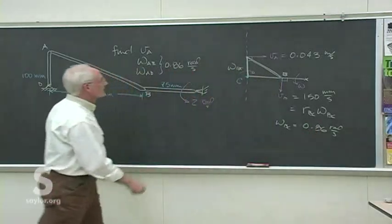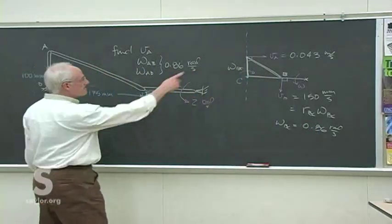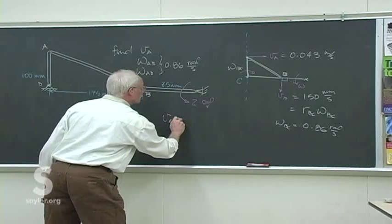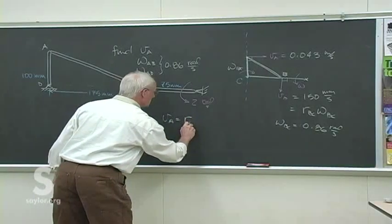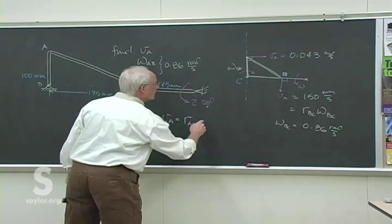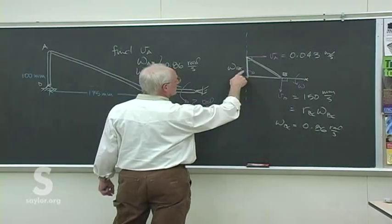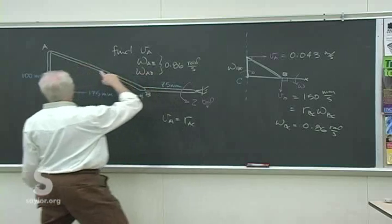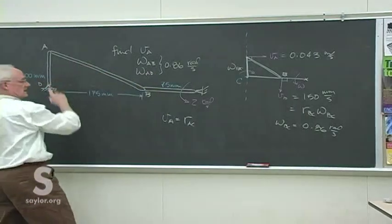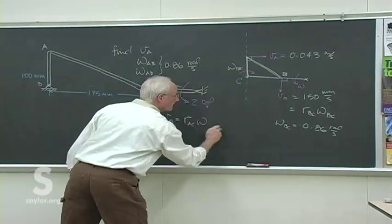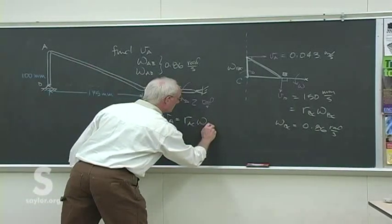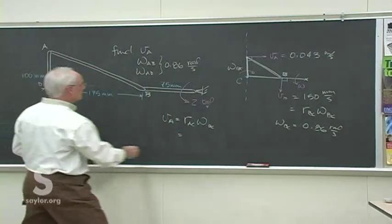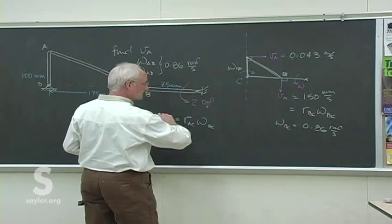VA is R_AC times omega_BC, which is the same as omega_AD, which we've got now. So what is VA? It's 0.086 times 0.1 — since AD is 0.1 — which comes out to be 0.086 meters per second.